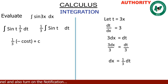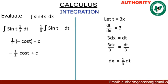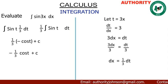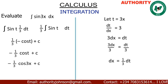The integral of sine t is going to give us minus cos t, plus c. So we have 1 over 3 times open bracket minus cos t, close bracket, plus c. When we open the bracket we get minus 1 over 3 cos t plus c. But t is equal to 3x, so let's replace it back.